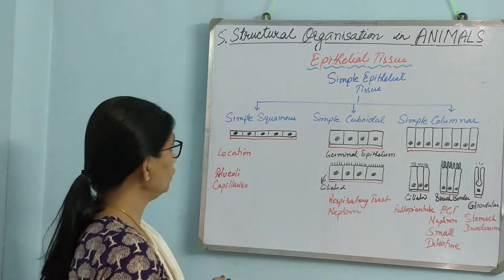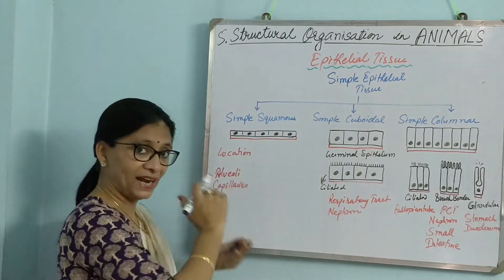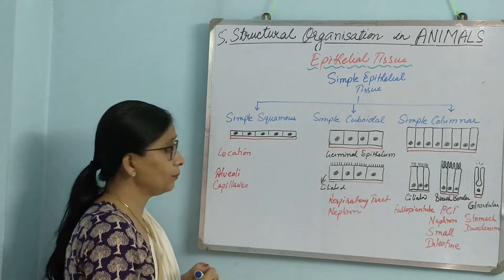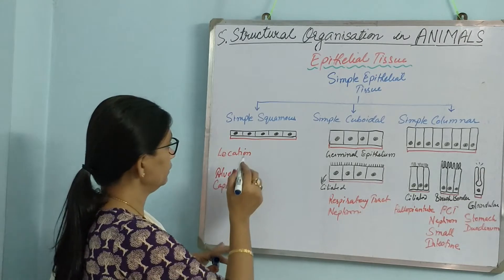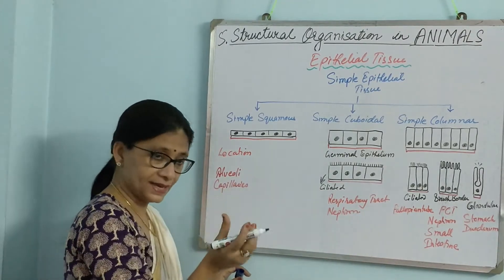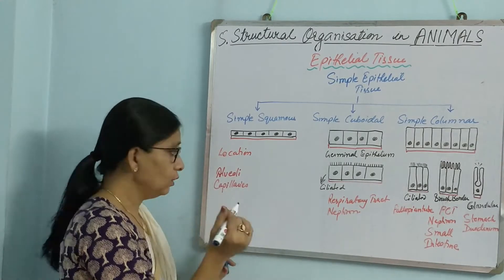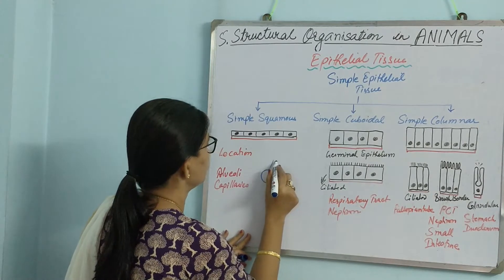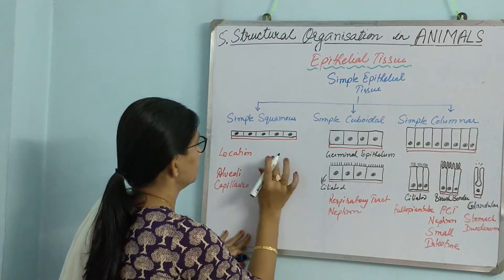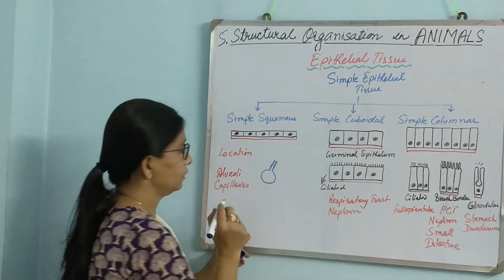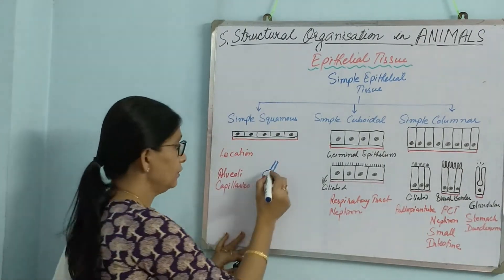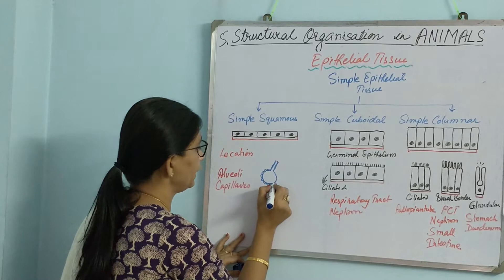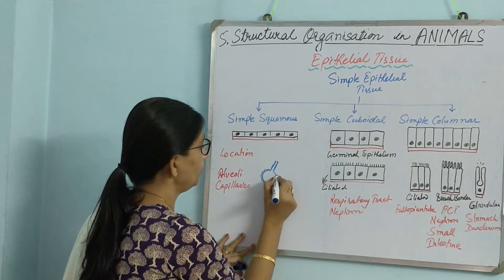So let us see what are those. Simple squamous — that means the flattest of all epithelial tissue. Simple squamous is found in alveoli, the air sacs, and capillaries. This is an alveolus, and it is made up of just one layer of cells. It is so thin — but what is the purpose of it being so thin?